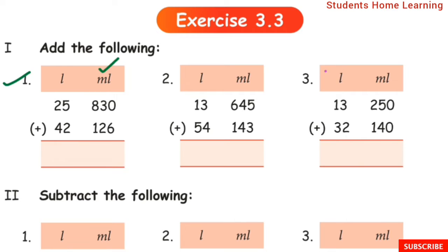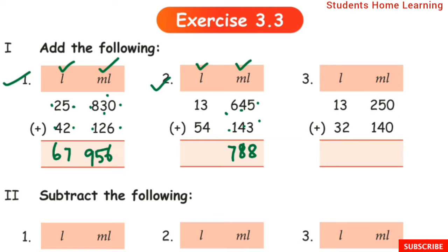Exercise 3.3, Add the following. First sum milliliter: 0 plus 6 is 6, 3 plus 2 is 5, 8 plus 1 is 9. Liter: 5 plus 2 is 7, 2 plus 4 is 6. Answer: 67 liter 946 ml. Second sum milliliter: 4 plus 4 is 8, 6 plus 1 is 7. Liter: 3 plus 4 is 7, 1 plus 5 is 6. Answer: 67 liter 788 ml. Third sum milliliter: 0 plus 0 is 0, 5 plus 4 is 9, 2 plus 1 is 3. Liter: 3 plus 2 is 5, 1 plus 3 is 4.